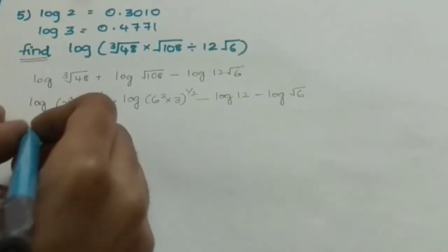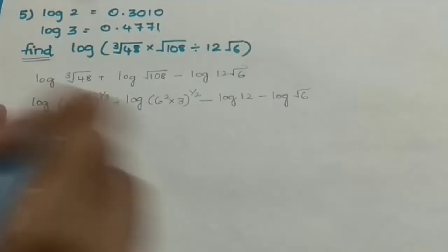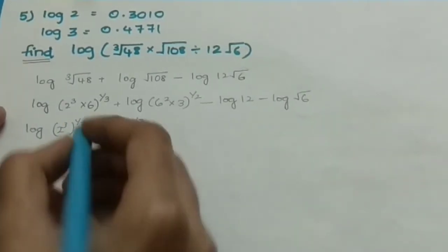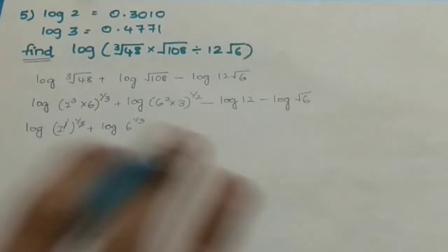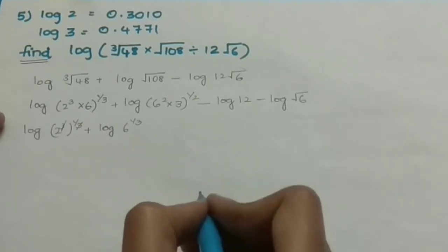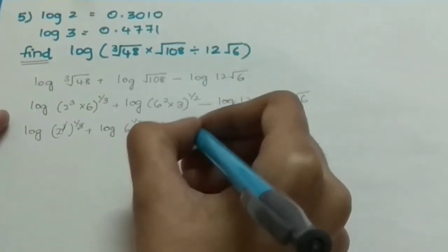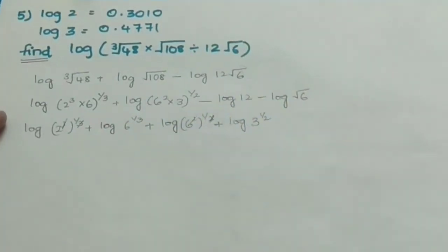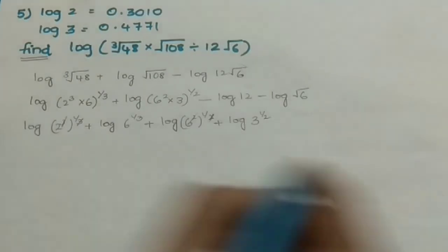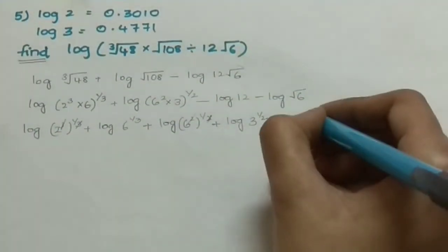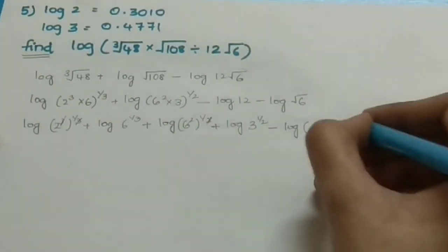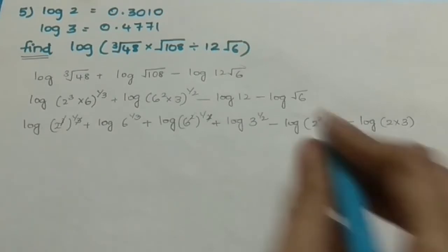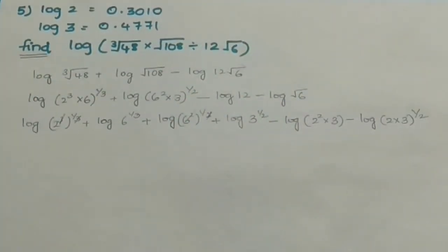Now, log(2^3) to the power 1/3: the 3 in the cube and the 1/3 cancel, leaving log 2. Plus log 6 to the power 1/3. Then log(6^2) to the power 1/2: the 2 and 1/2 cancel, giving log 6. Plus log 3 to the power 1/2. Minus log 12, which is log(2^2 × 3). Minus log(2 × 3) to the power 1/2.